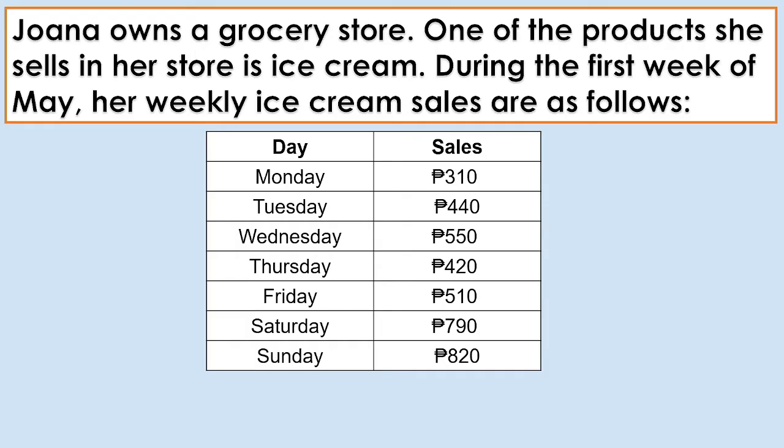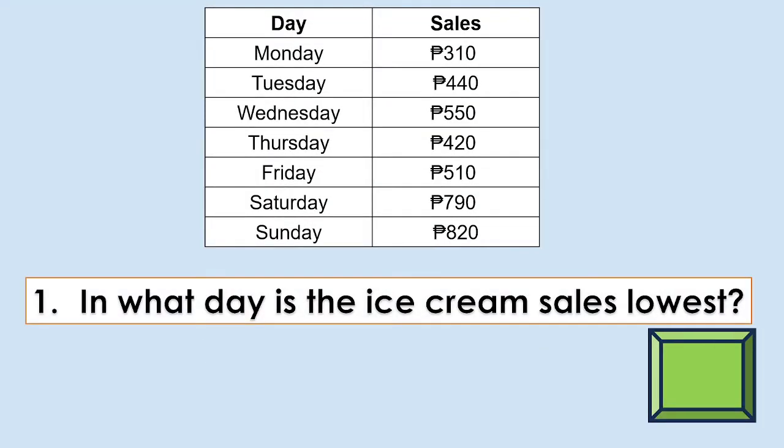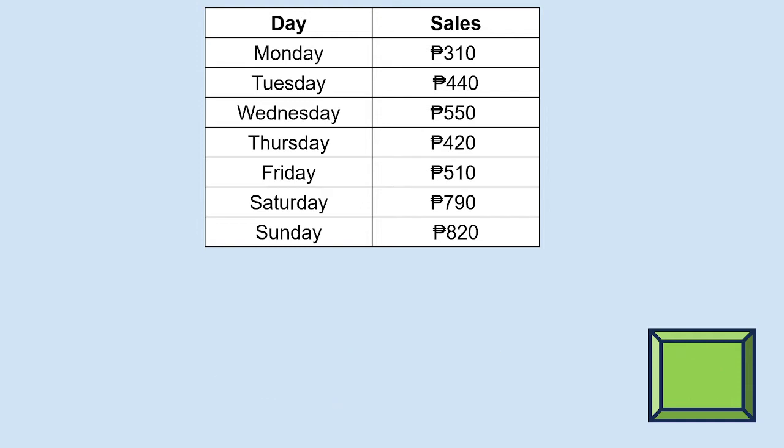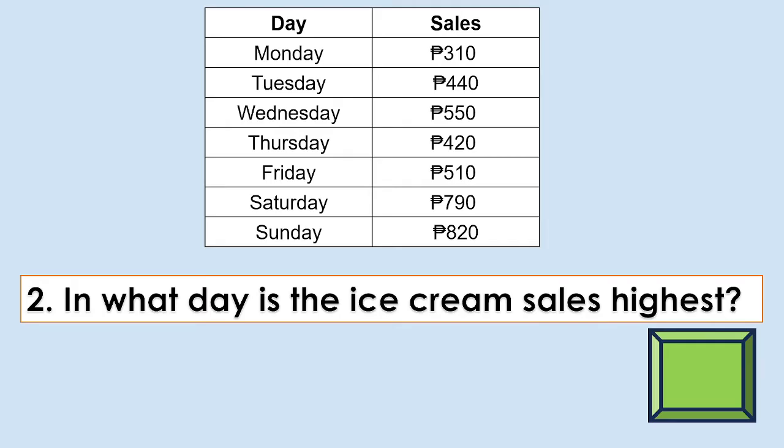Activity number 2. Analyze the situation then answer the questions that follow. Joanna owns a grocery store. One of the products she sells in her store is ice cream. During the first week of May, her weekly ice cream sales are as follows. I have here guide questions. Number 1: In what day is the ice cream sales lowest? The answer is Monday. Number 2: In what day is the ice cream sales highest? The answer is Sunday.